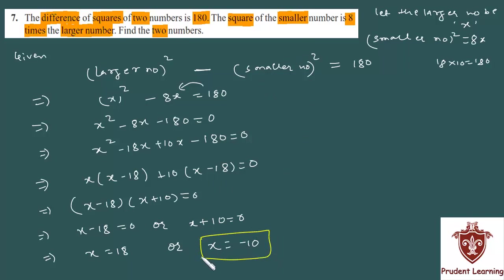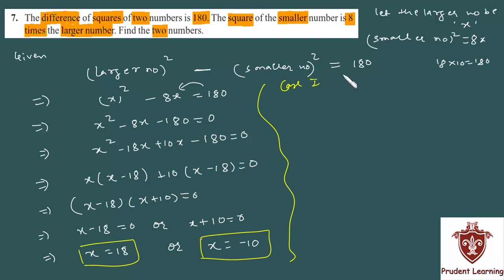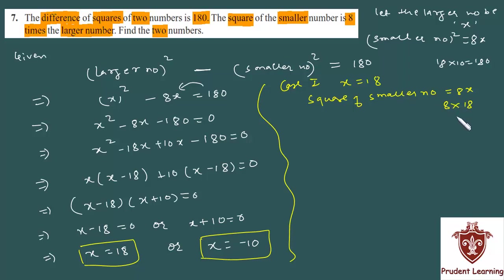We have two values of x, and x was our larger number, so two cases arise. In case 1, x equals 18. Since x is the larger number, the square of the smaller number is 8x, that is 8 times 18, which equals 144. So the smaller number squared is 144.